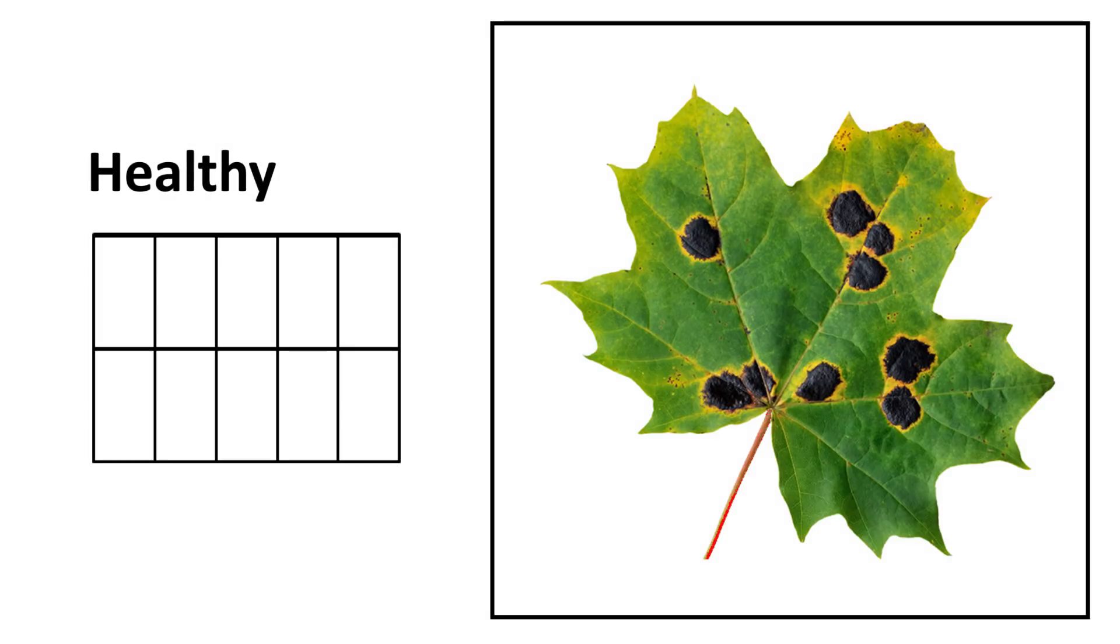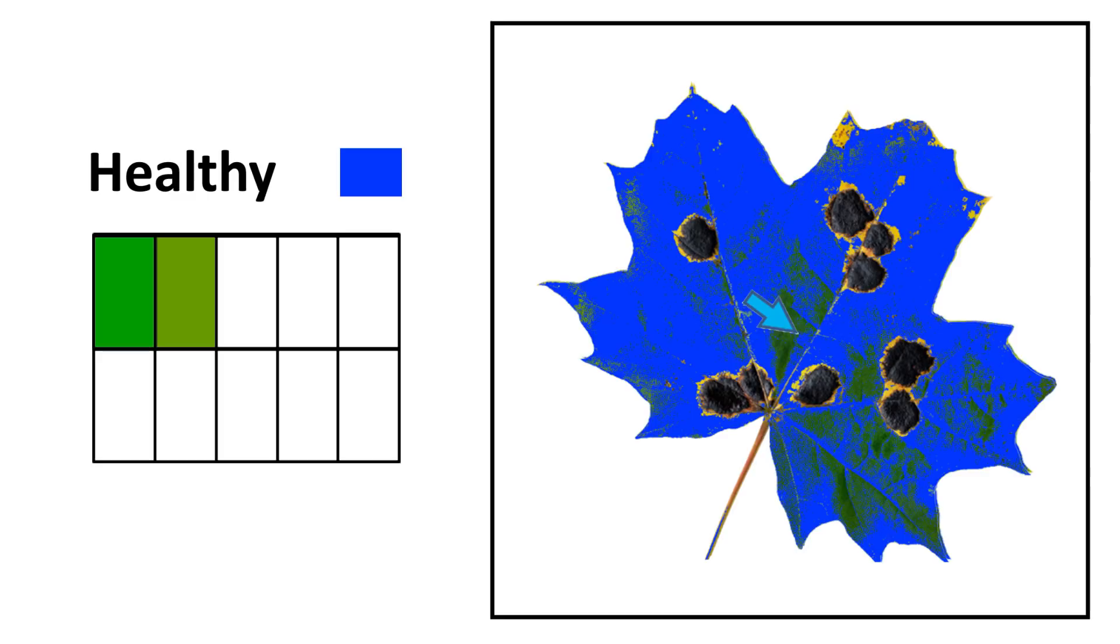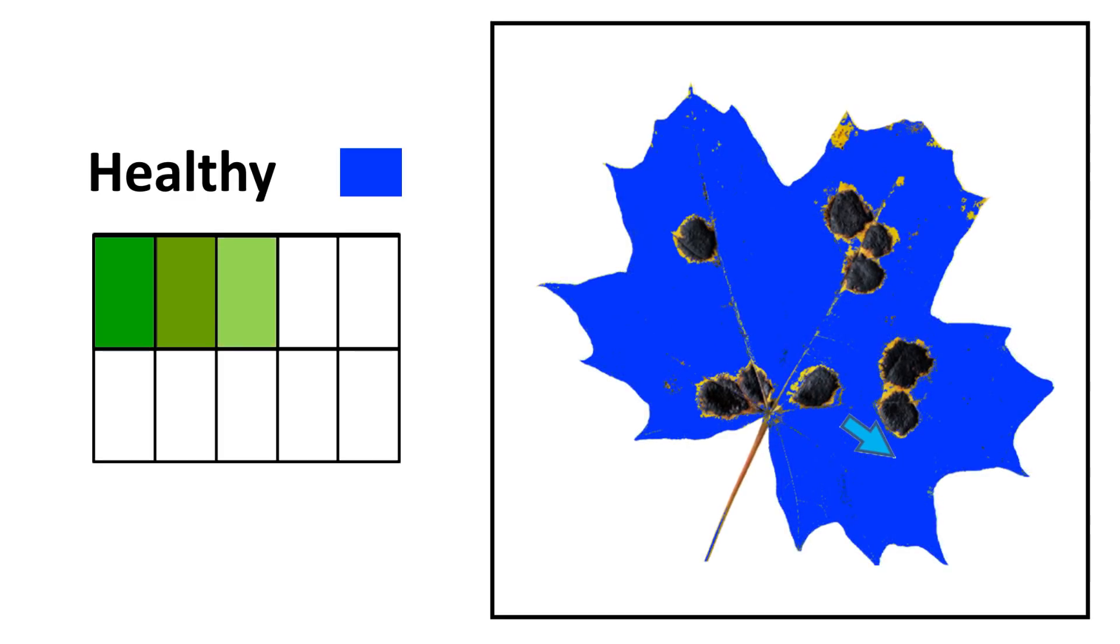Select a single colour to represent the healthy sections of the leaf. We'll choose blue. Now, click on the healthy sections of the leaf. Each time a healthy shade is selected, it changes to blue on the leaf image. Keep clicking until all healthy sections are selected.